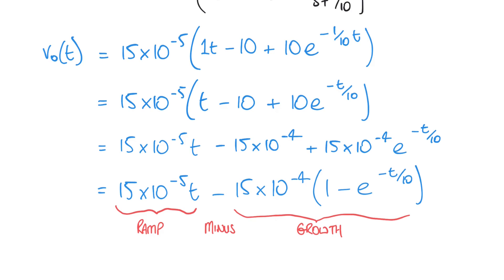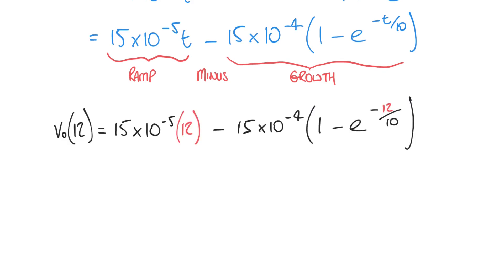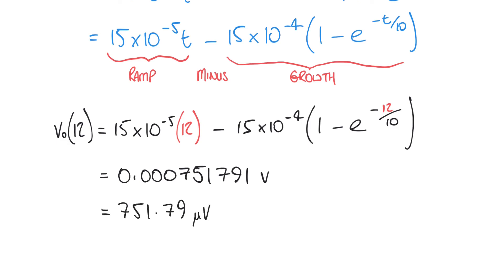Returning to the original question — what is the output after 12 seconds? — we simply substitute t equals 12 into our time-domain expression. This gives an answer of 0.000751791 volts, or better expressed as 751.79 microvolts for the voltage at 12 seconds.